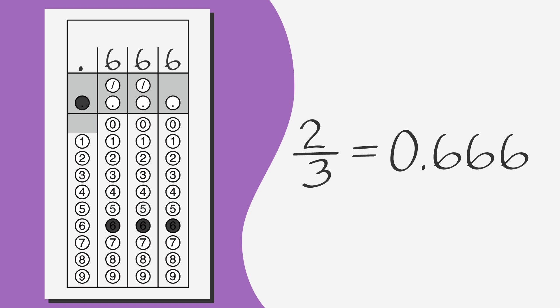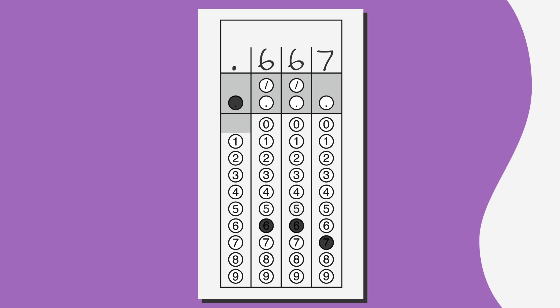Or you can round the repeating decimal up to 0.667. Either option works, but for a repeating decimal, such as this one, be sure to use all the columns. For example, 0.67 would be considered less accurate and scored as incorrect.